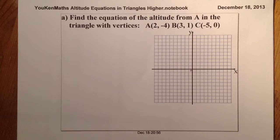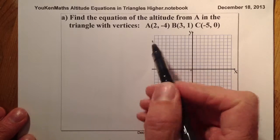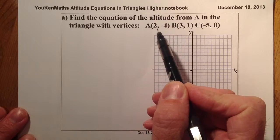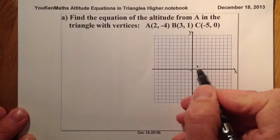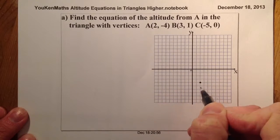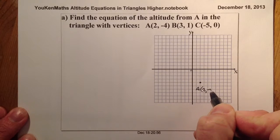Let's go ahead with this question. I'll draw out the triangle first and then show you the process. So let's start by plotting the points. A is (2, -4), so 2 along and 4 down — that gives me point A at (2, -4).